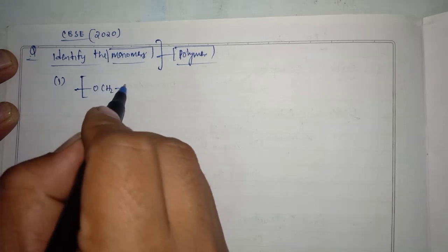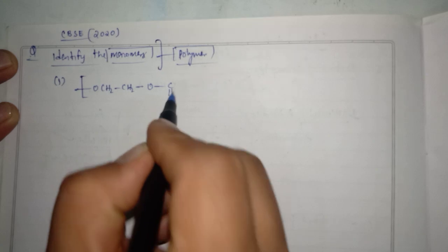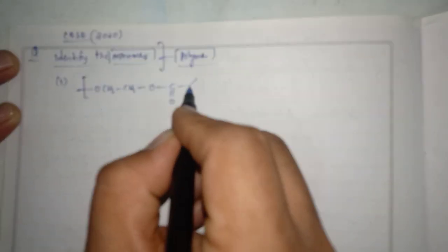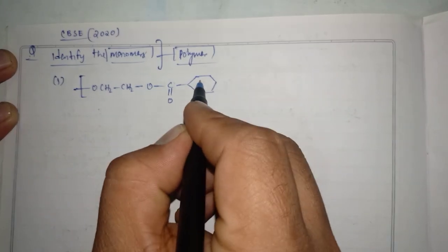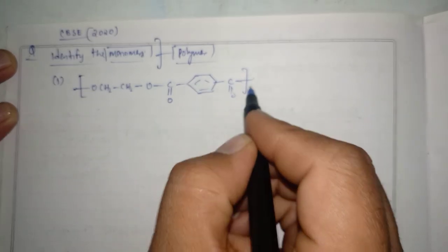O, CH2, CH2O, single bond carbon, double bond oxygen, then further a benzene ring, then further C, O, bracket base N.